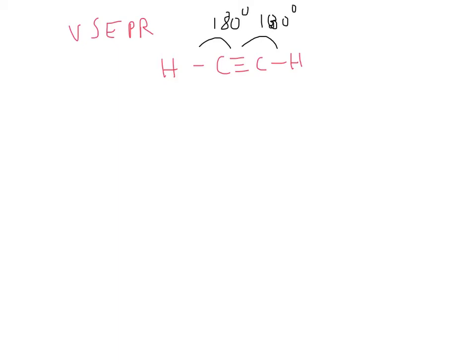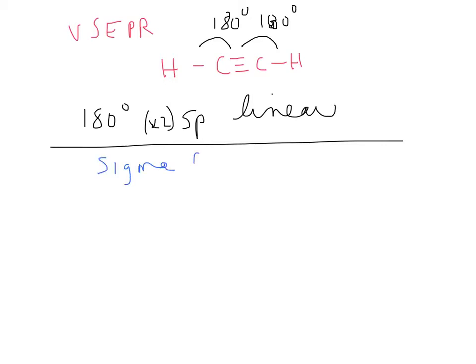So if it's 180 degrees, 180 degree bond angle, you go to your chart, and you realize that you need SP hybrids for the linear structure. And each carbon is going to need two SP hybrids. So you can draw the sigma framework and include the SP hybrids. So each carbon has two SP hybrids. And then the hydrogens are at the end.